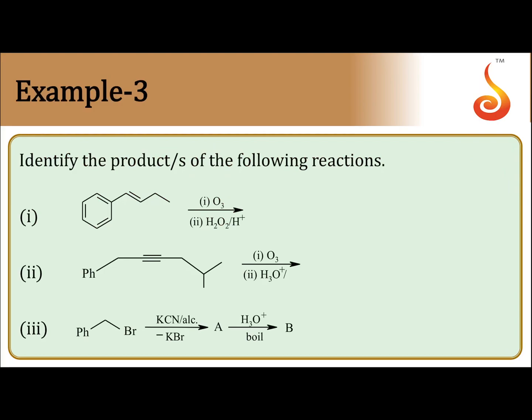So what will we get here? CH3COOH plus CH3C(=O)CH3. This is the general reaction. Now for Reaction 1: remove the double bond and convert to carboxylic acid. The products obtained are benzoic acid and propanoic acid — CH3CH2COOH.